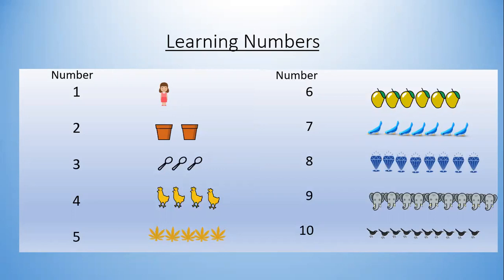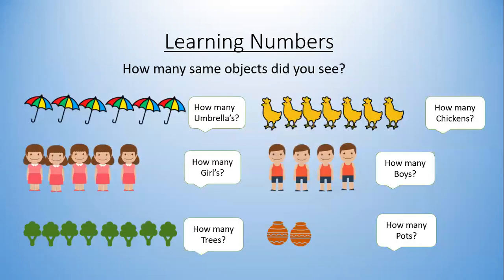Seven: can you count the birds? One, two, three, four, five, six, seven — seven birds. Eight: one, two, three, four, five, six, seven, eight — eight diamonds. Nine: one, two, three, four, five, six, seven, eight, nine — nine elephants. Ten: one, two, three, four, five, six, seven, eight, nine, ten — ten birds. Now let's see further — it's activity time!